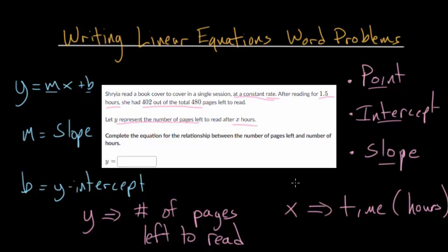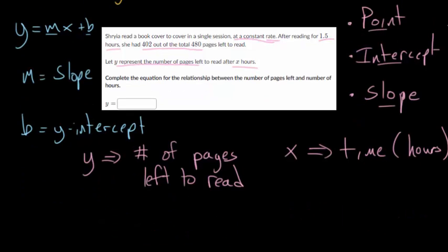And once you've defined your variables, now you want to go and look for these key pieces of information. So let's think about what they did give us. At this point, you're kind of looking for the numbers here. So after reading for 1.5 hours, she had 402 out of the total of 480 pages left to read. So it looks like, if you do the subtraction, that she read 78 pages in 1.5 hours. So let me start writing this down, because we're going to organize all of our information.